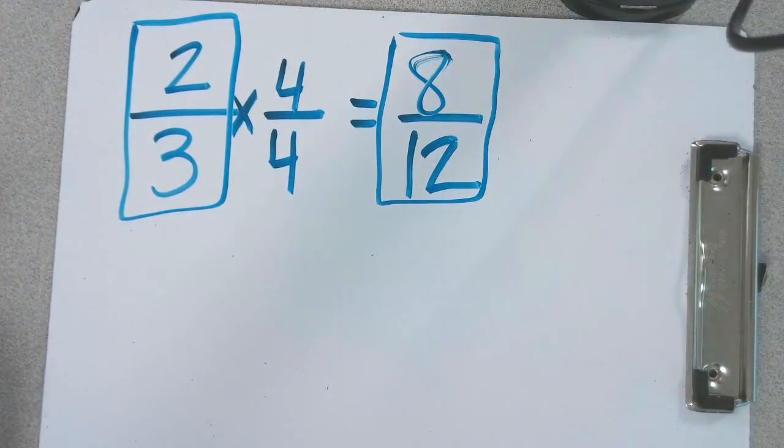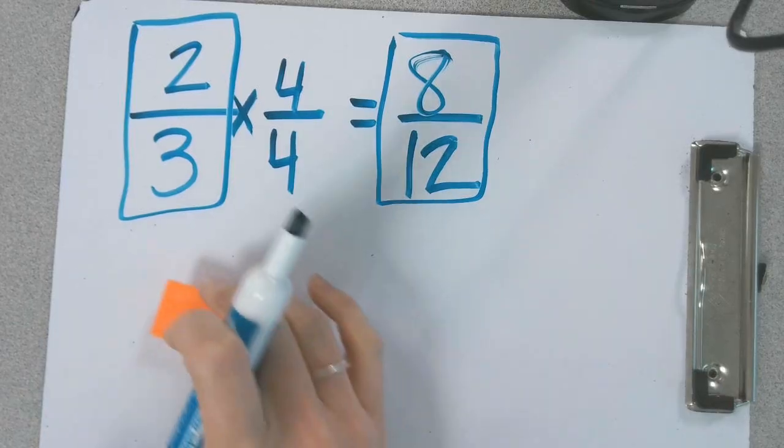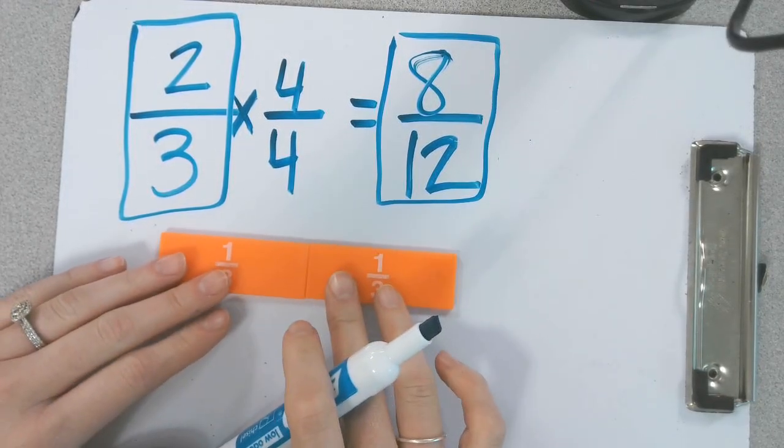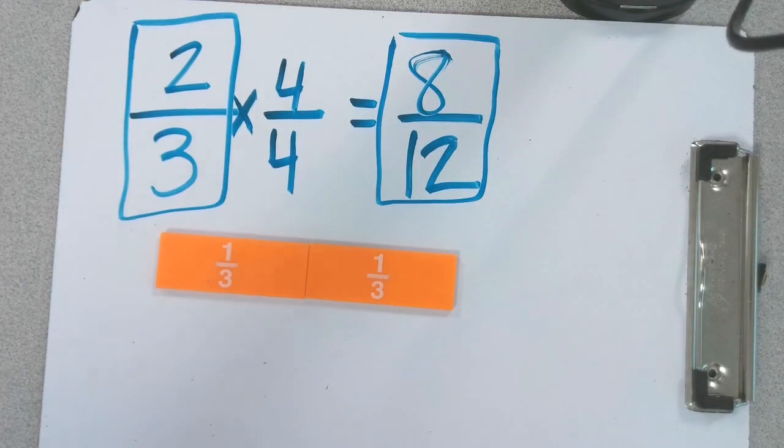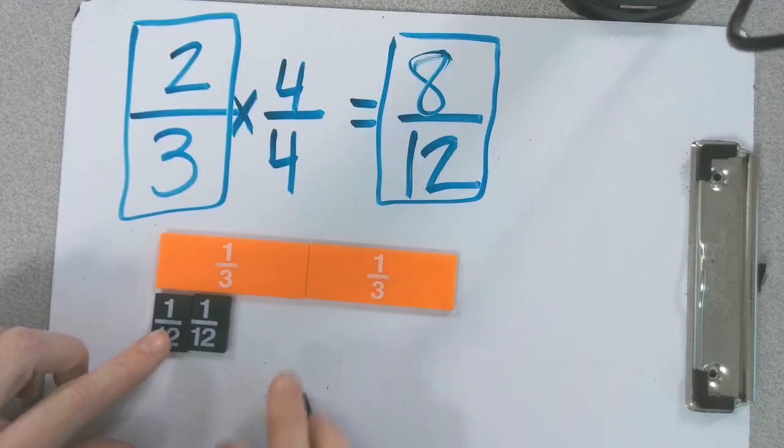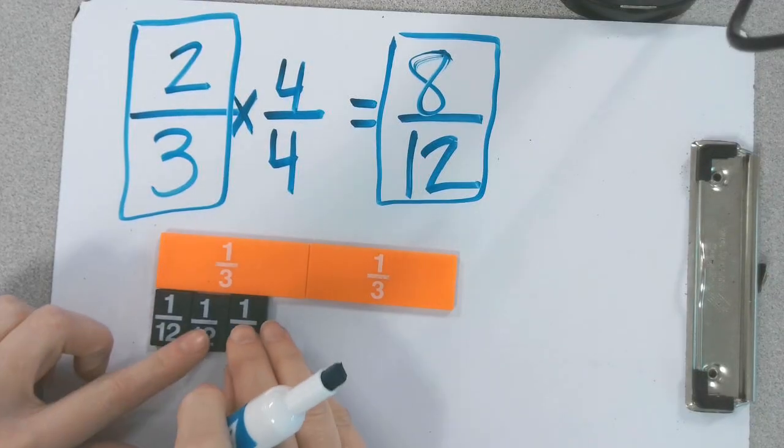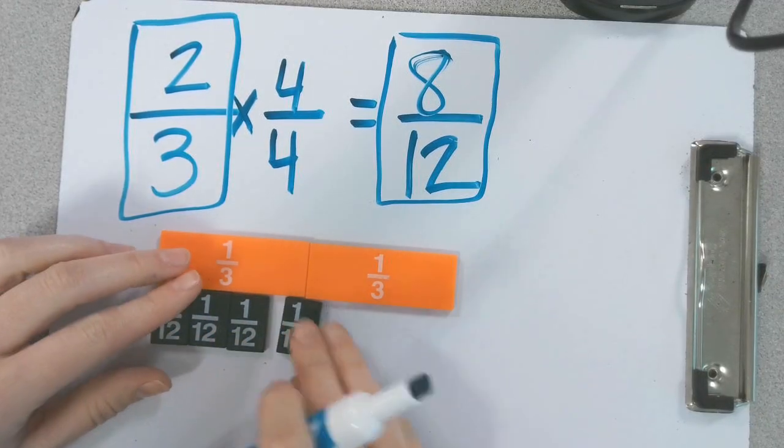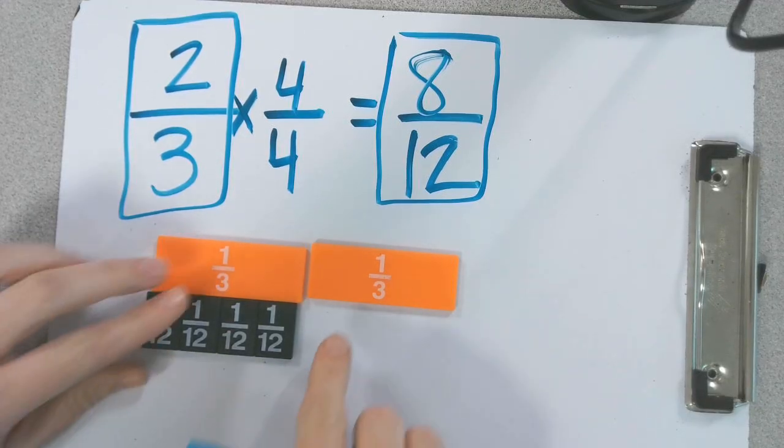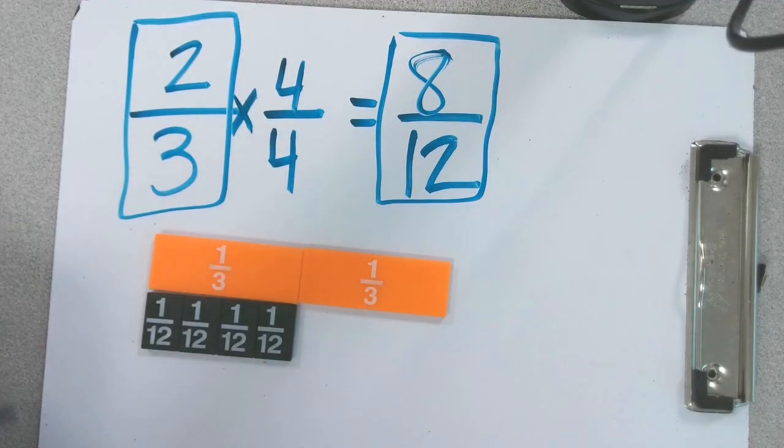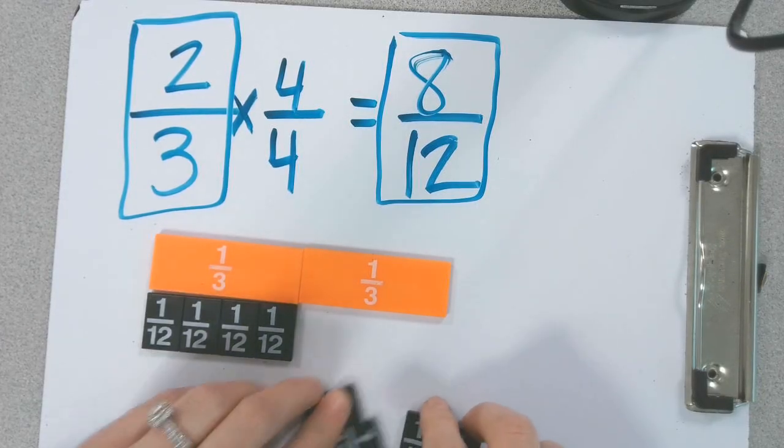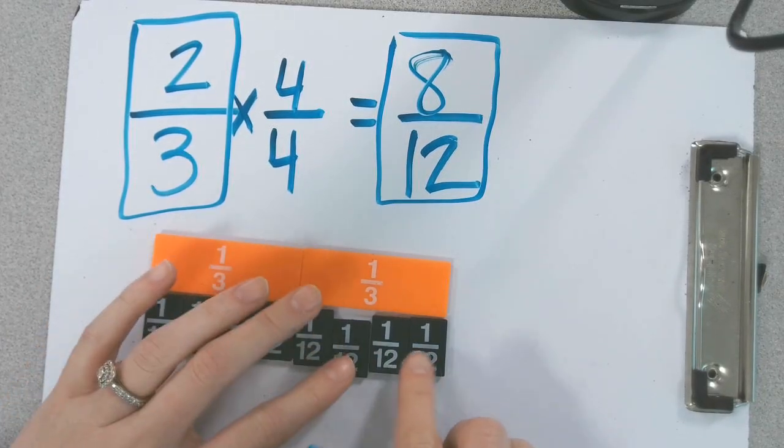And I can prove that by using fraction strips. So I have 2 thirds, and I'm going to put up twelfths to show the equivalents of 2 thirds and 8 twelfths. Using these twelfths pieces, I can see that 1 third is equivalent to how many twelfths? 4 twelfths. So 2 thirds should be equivalent to how many twelfths? 8 twelfths.